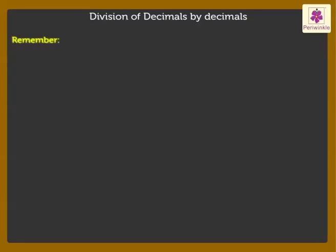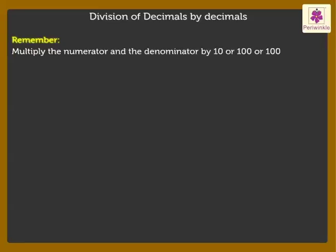Remember: multiply the numerator and the denominator by 10, or 100, or 1000, so as to get a natural number in the denominator.